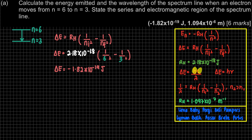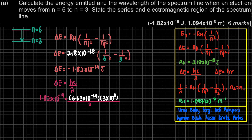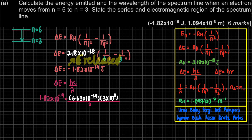H is 6.63×10⁻³⁴. However, when you substitute the value to calculate the wavelength, even though the delta E is negative, you don't have to put the negative value here. The negative only shows that the energy is being released. Planck's constant is a positive value, and wavelength is always positive.